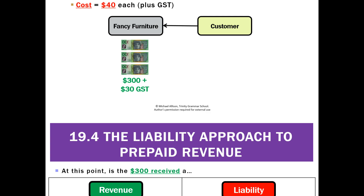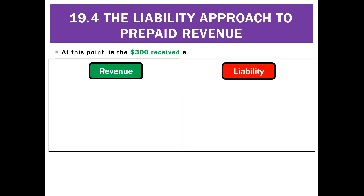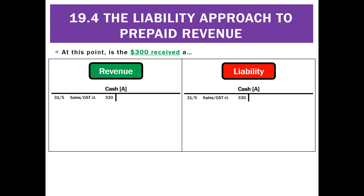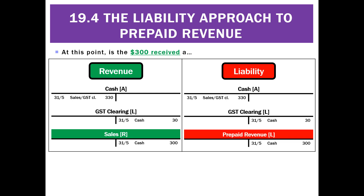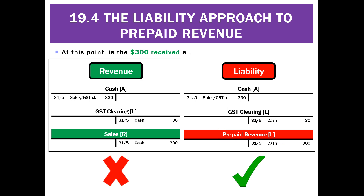We haven't earned that money at all yet. So at this point, the $300 is going to be either a revenue or a liability. We've got some cash, so either way we treat it as a debit to the cash account. We've collected some GST, so either way that's going to be a credit to GST. Then we've got a choice: we can either call it a revenue — earned some sales — or we can call it a prepaid revenue liability. The correct method is the one on the right, where you call that $300 prepaid revenue, and most importantly, that's a liability. It's not actually a revenue yet because we haven't earned it.